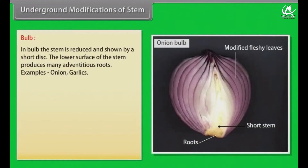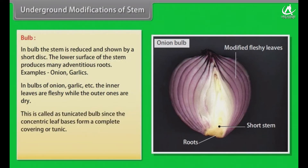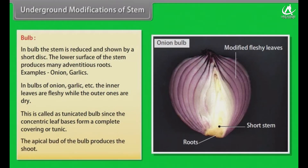In a bulb, the stem is reduced and shown by a short disc. The lower surface of the stem produces many adventitious roots. Examples: Onion, Garlic. In bulbs of onion and garlic, the inner leaves are fleshy while the outer ones are dry. This is called a tunicated bulb, since the concentric leaf bases form a complete covering or tunic. The apical bud of the bulb produces a shoot.